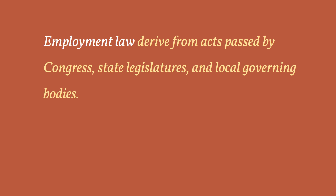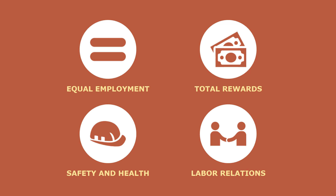Employment regulations derive from laws passed by Congress, state legislatures, and local governing bodies. They also originate from executive orders of the President of the United States to manage the operation of federal government and its contractors. These regulations commonly focus on fair treatment of people in the workplace. Nearly all employment laws can be categorized in four areas of the regulatory environment: equal employment, total rewards, employee safety and health, and labor relations.